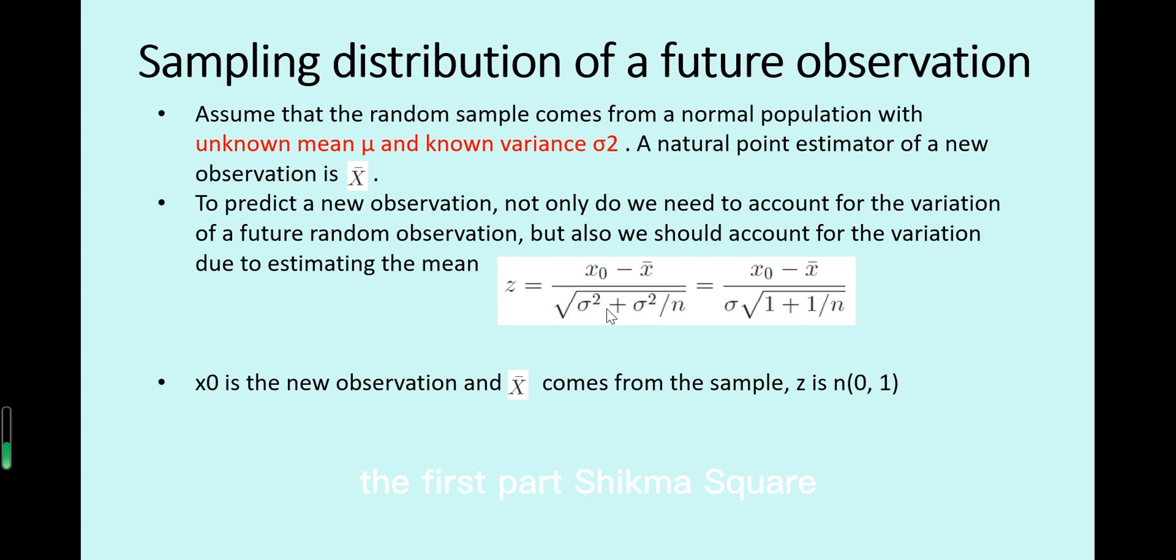The first part σ² which is the known variance of the population variance. And the second part is σ² divided by n is sampling mean's variance. So sampling means also have variance but is very small compared with the population. Because sampling mean average of the sample, the variance is σ² divided by n.